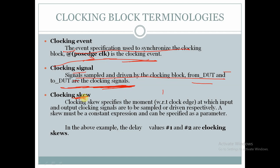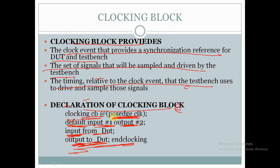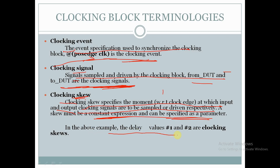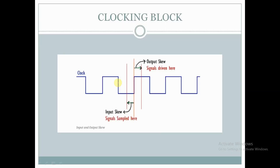Clocking skew: clocking skew specifies the moment with respect to the clock edge at which input and output clocking signals are to be sampled or driven respectively. A skew must be a constant expression and can be specified as a parameter. In this example, the input skew is #1 and output skew is #2. These values #1 and #2 are the clocking skews.